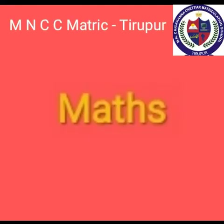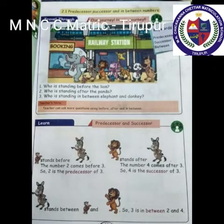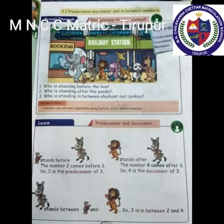Second standard math. You need two numbers concepts: predecessor, successor, and in-between numbers. Predecessor means before, successor means after, and between means between two numbers. See the picture: who is standing before the lion? Donkey. Who is standing after the panda? Horse. Who is standing in between elephant and donkey?